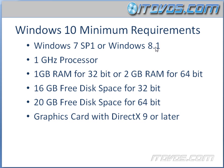Now whether we're upgrading or doing a fresh install of Windows 10, these are the hardware requirements we're going to need. At least a 1 GHz processor. For the 32-bit version of Windows 10, we're going to need at least 1 GB of RAM. For 64-bit, we're going to need at least 2 GB of RAM. For the 32-bit edition, we're going to need at least 16 GB of free disk space. For the 64-bit edition, at least 20 GB. And we're going to need a graphics card with DirectX 9 or later. These requirements are very important to memorize for the test.